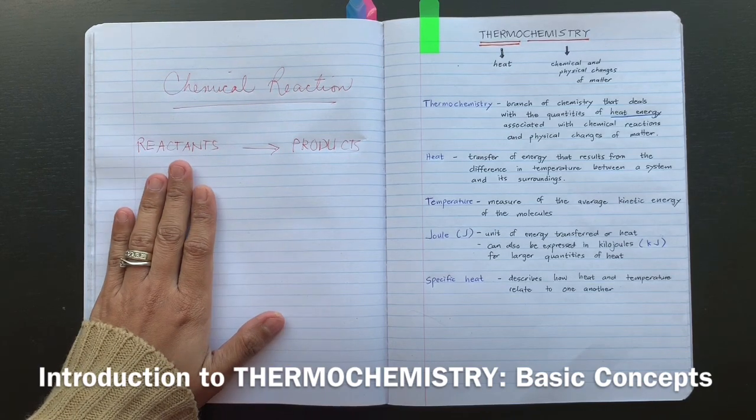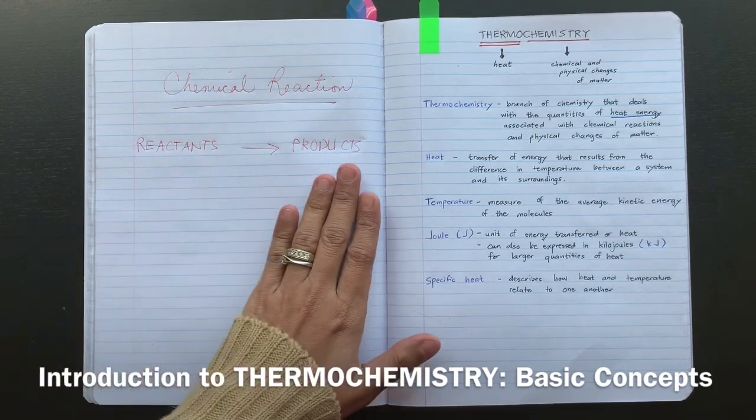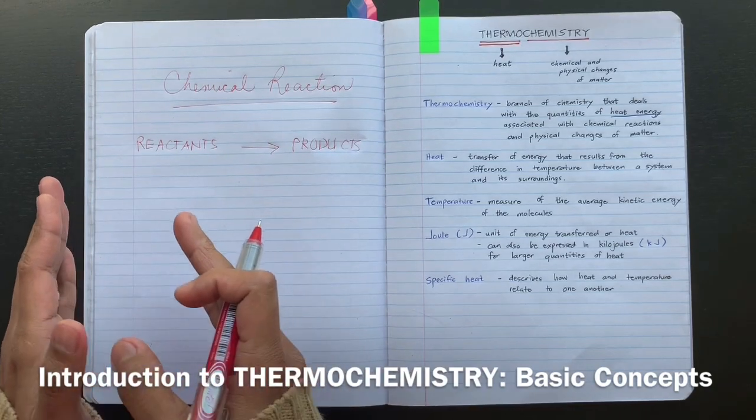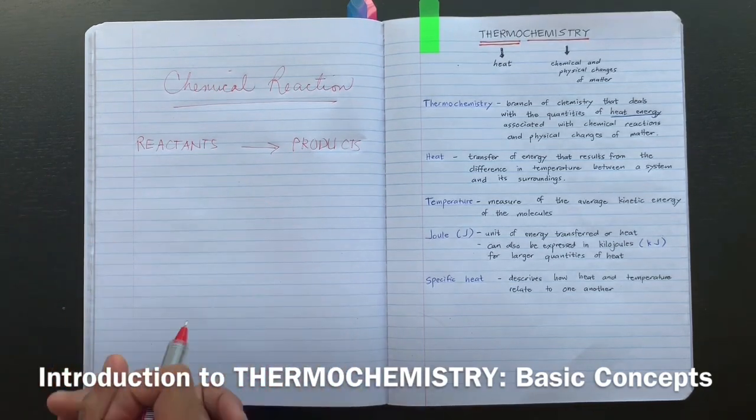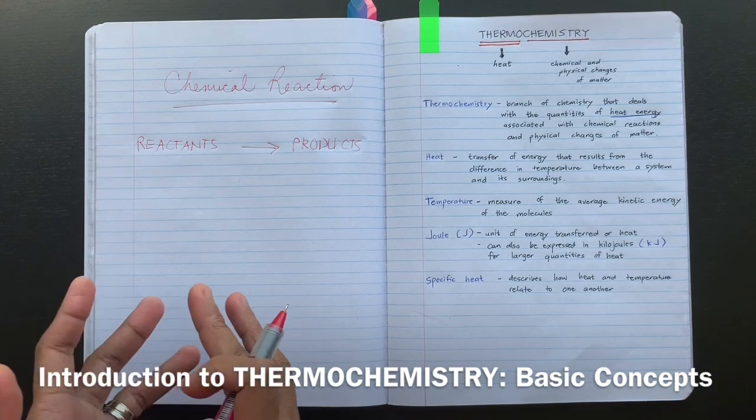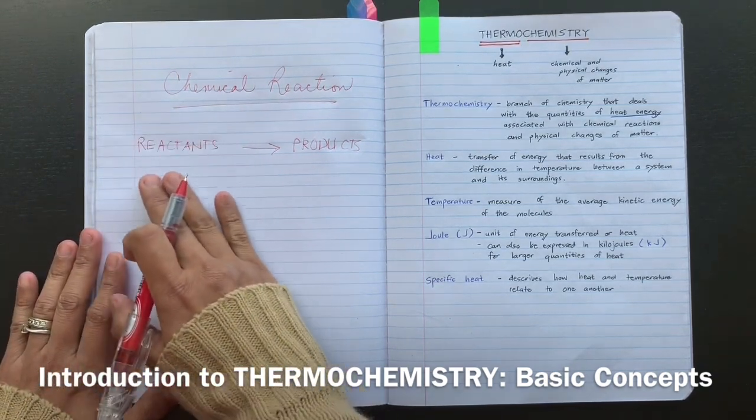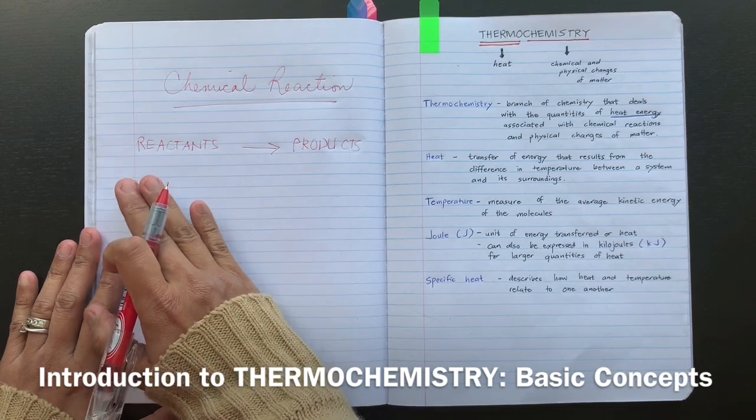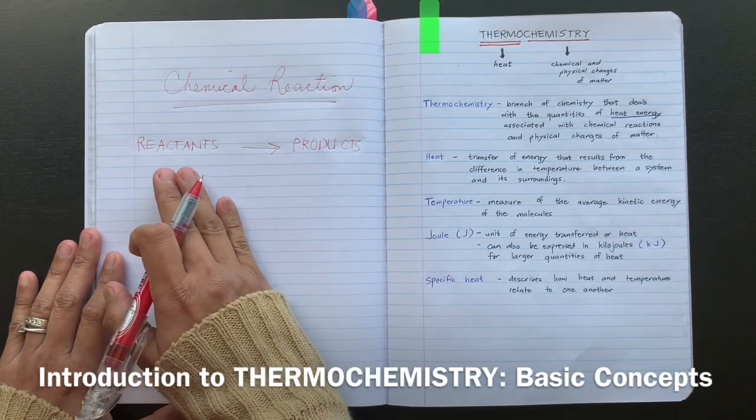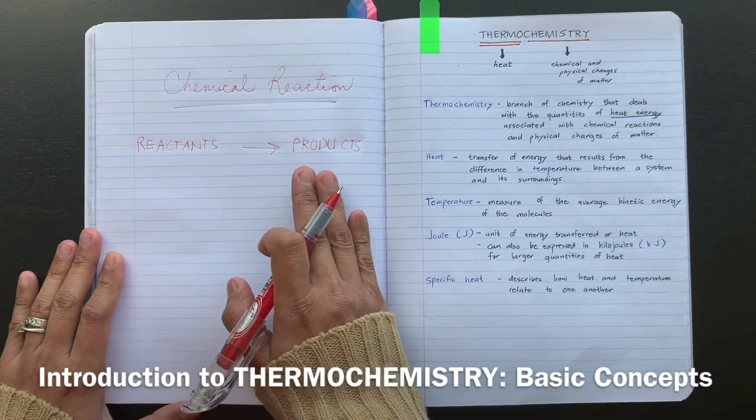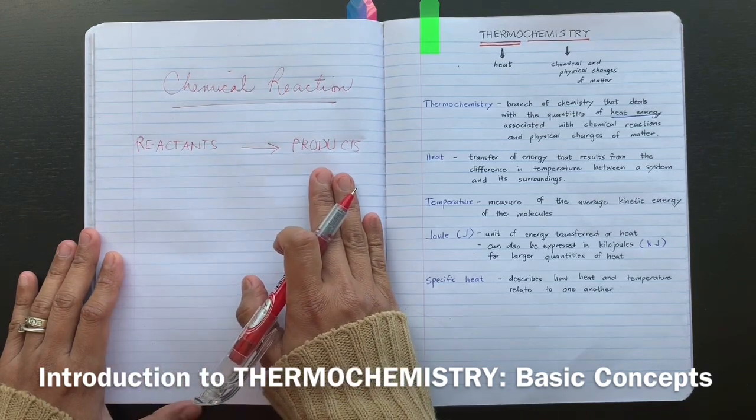So that the reactants could be transformed into products. So think about the energy involvement in a chemical reaction as something that's happening with the reactants, the collision and the bond breaking and the new bond formation that's going on.